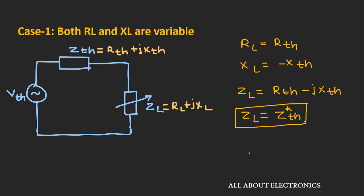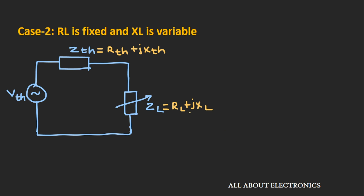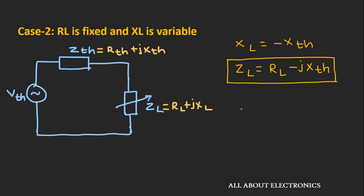In the second case, load resistance RL is fixed but the reactive part XL is variable. For maximum power transfer, the value of XL should equal −Xth. So the impedance ZL will be RL − j·Xth.